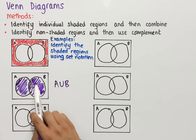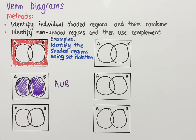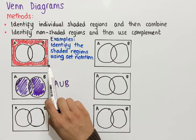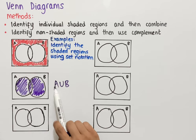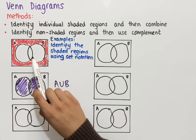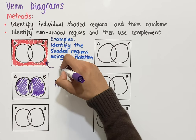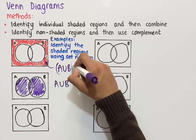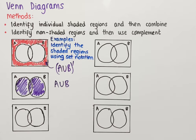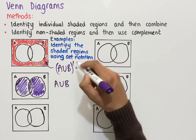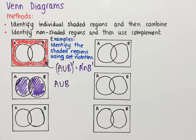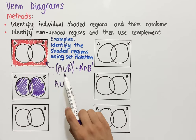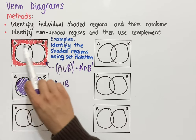A union B is all of A combined with all of B. To work out the shaded region in the original Venn diagram we apply complement to A union B, giving us (A union B) complement. This is also equivalent to A complement intersect B complement — both are valid set notations for this shaded region.